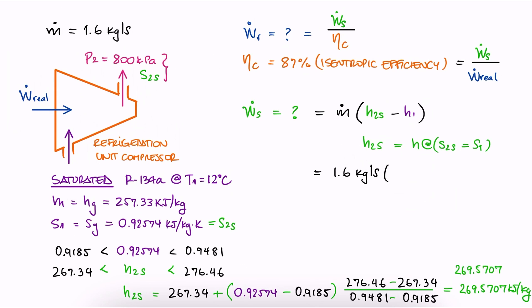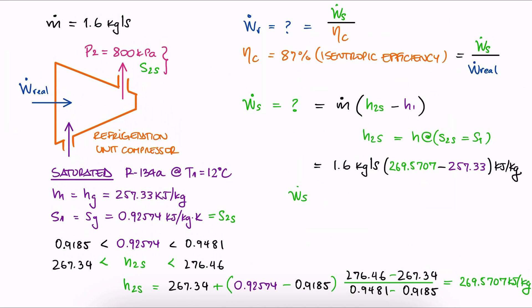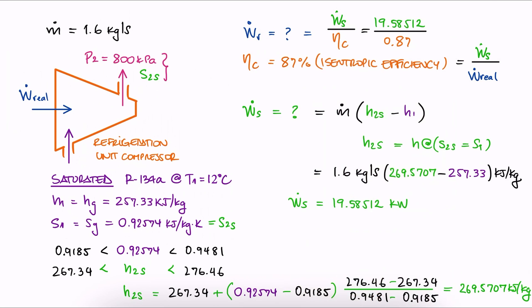We substitute both specific enthalpy values to find the work input for the isentropic case, and with that work value and the isentropic efficiency, we find the work input for the real case.